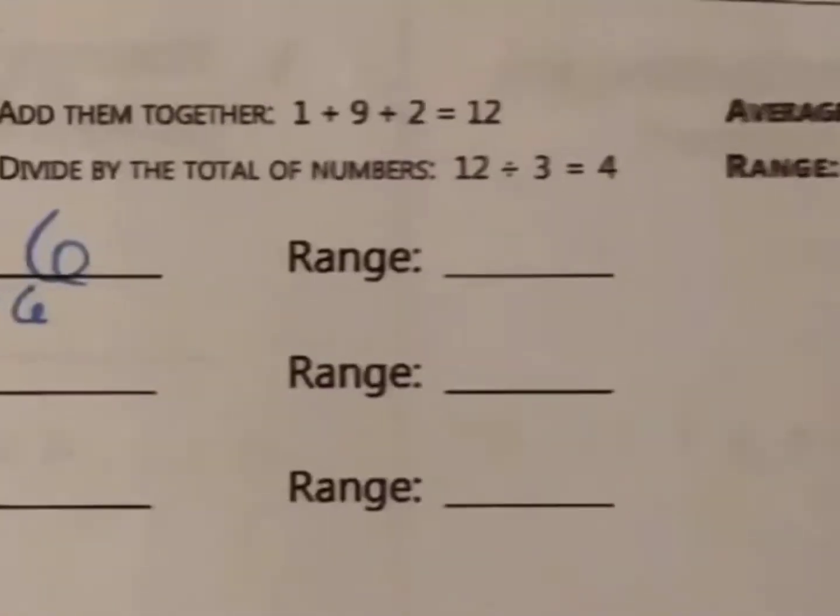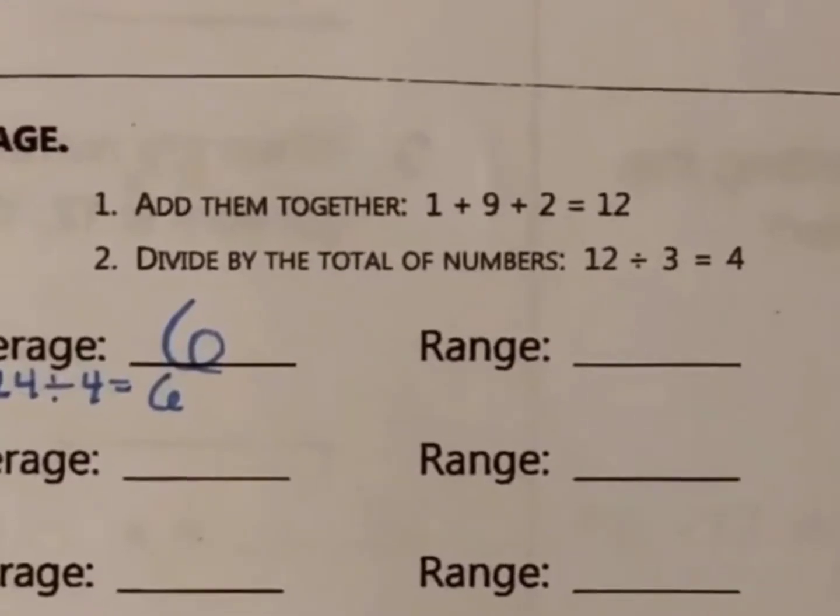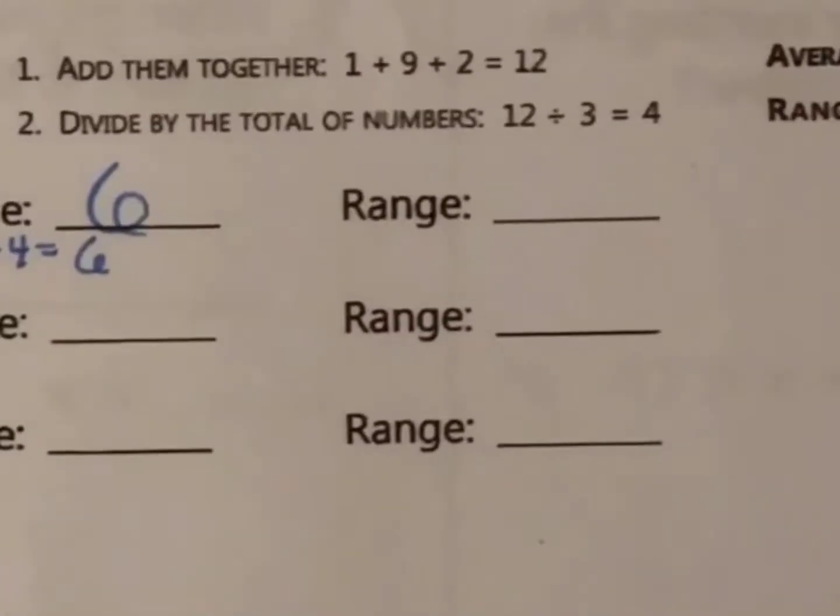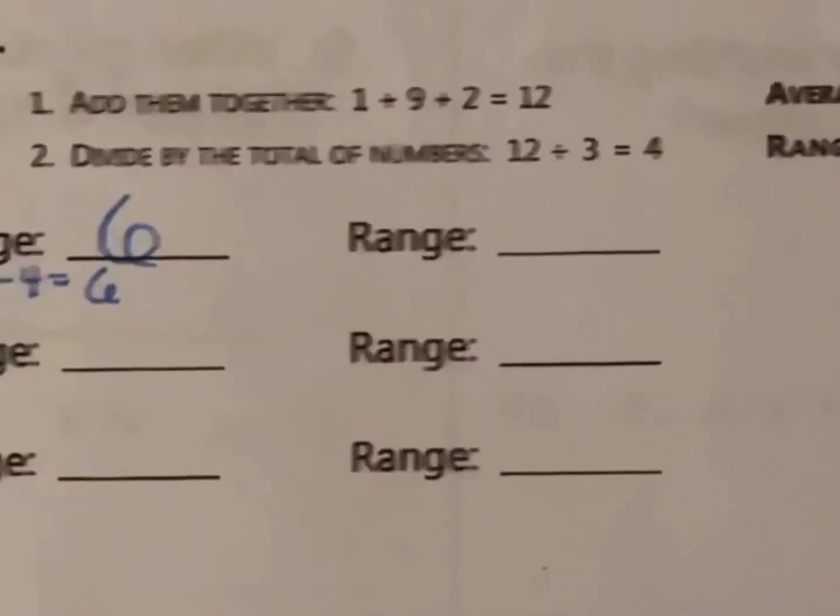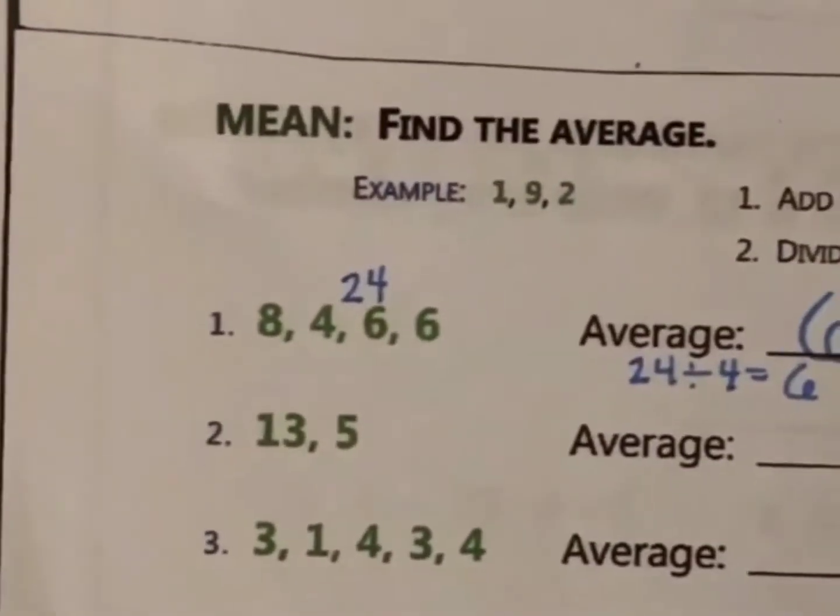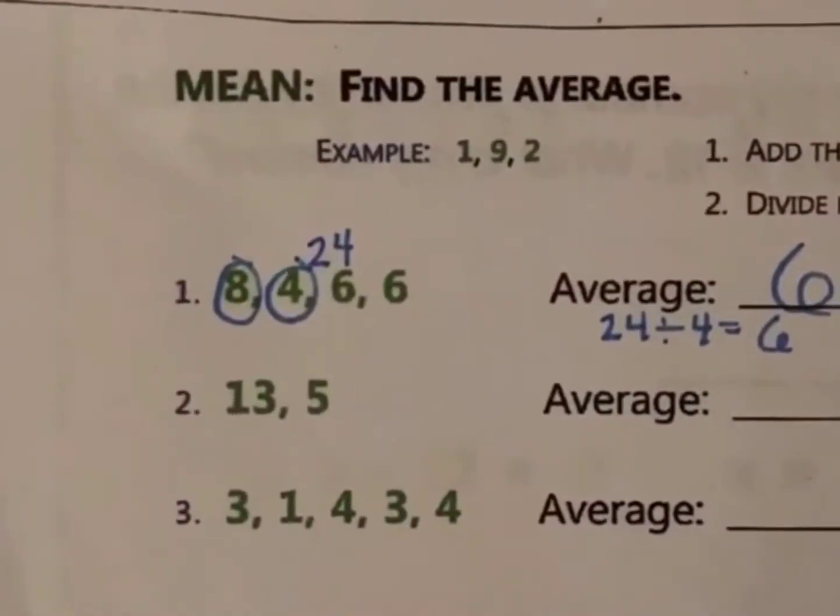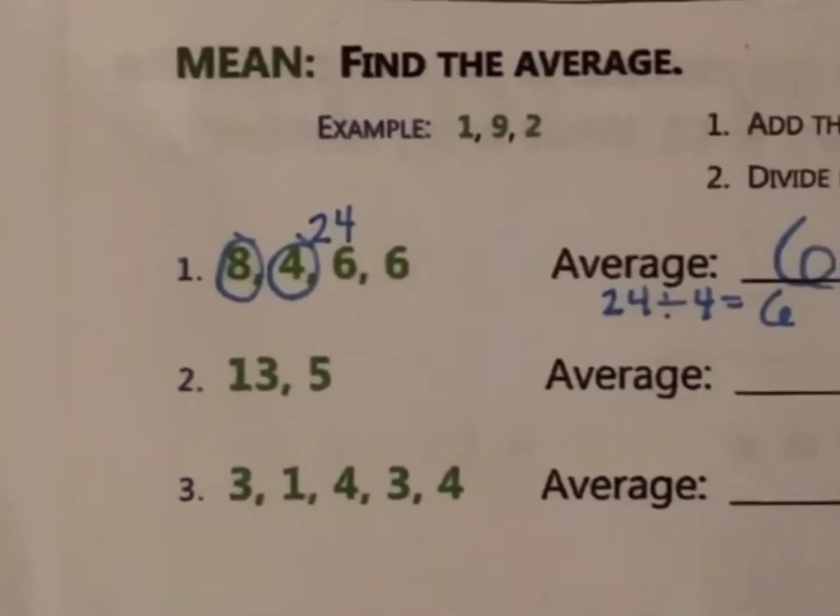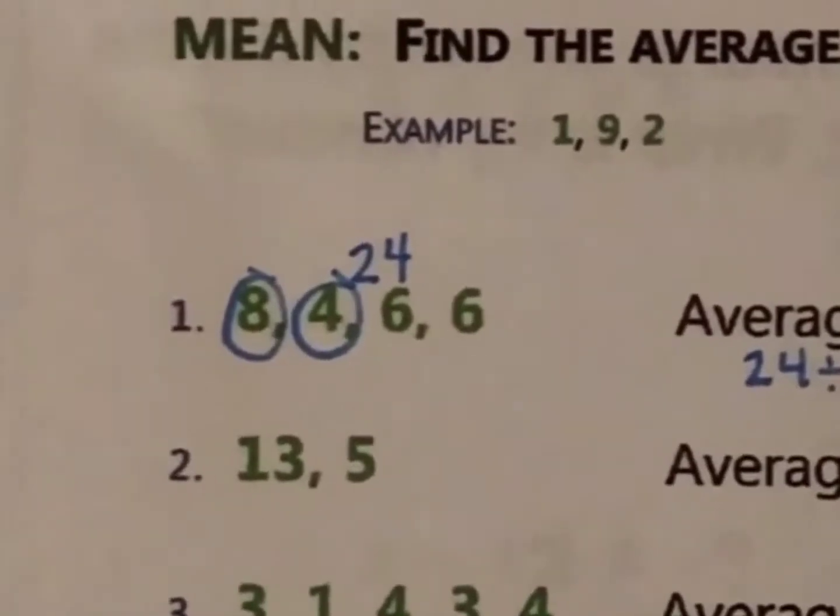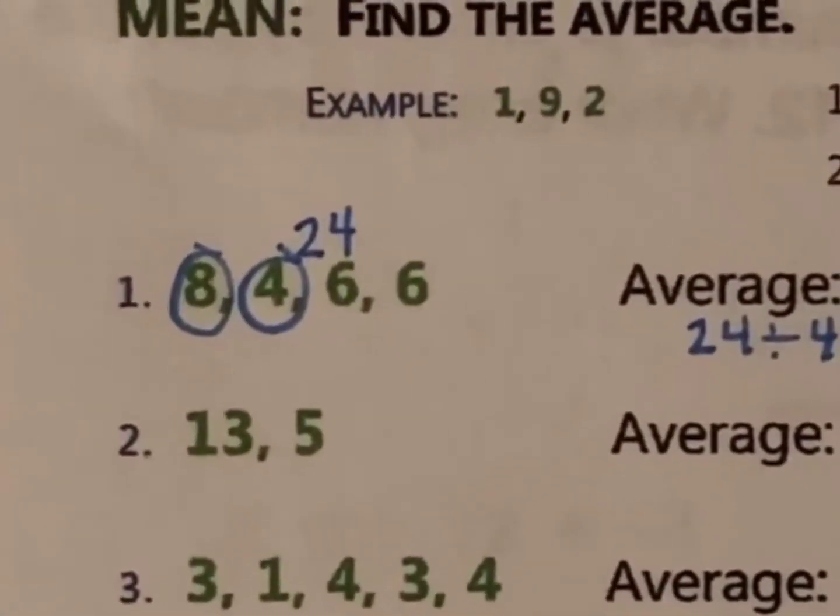Now, when it goes over to find range, you don't have directions for range, and so if you don't remember how to find range, range is the difference between the smallest and the biggest numbers in the set. So how far apart are they spread out? When finding range, I always like to circle the smallest and biggest numbers. So, they are 8 and 4, and so the difference between 8 and 4 is 4, and the range is 4.